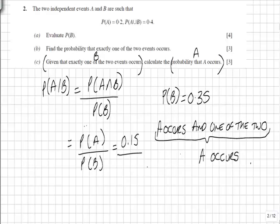Also from the previous question, the probability that exactly one of the two events occurred is 0.35. That gives us an overall probability of 3/7.